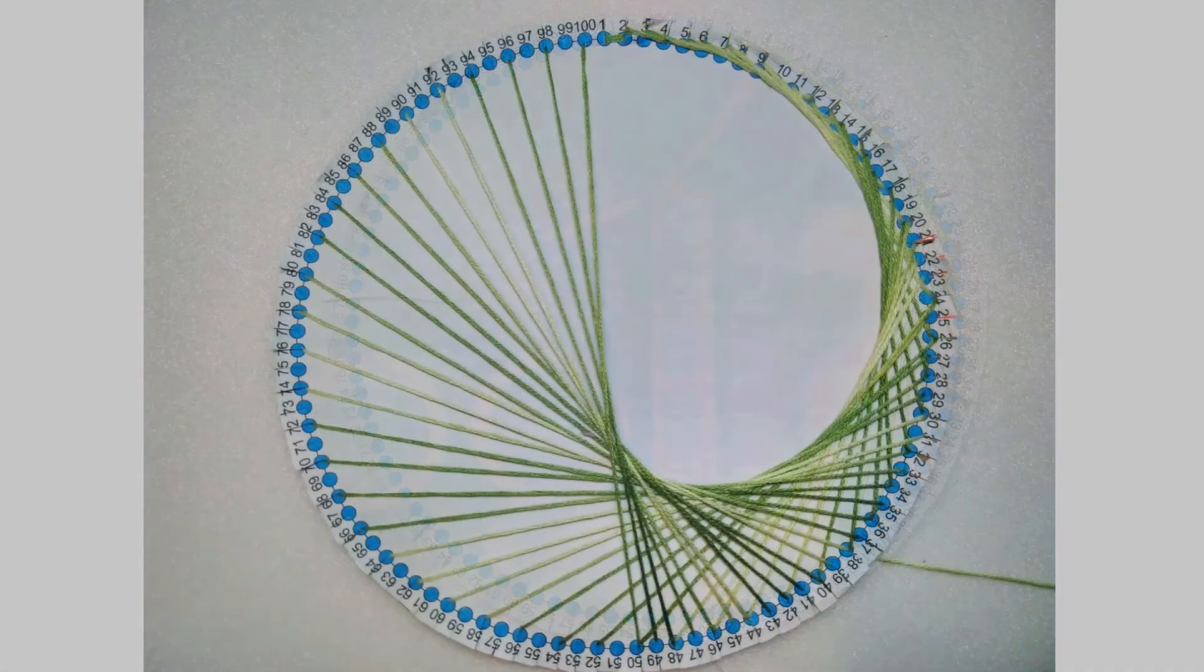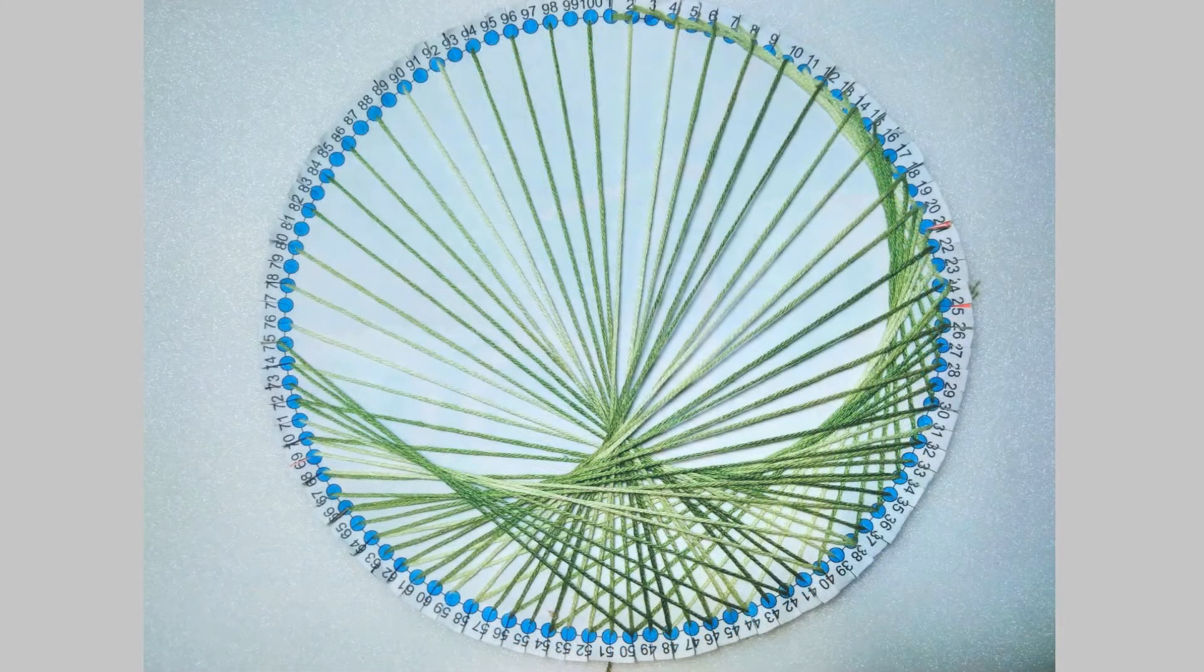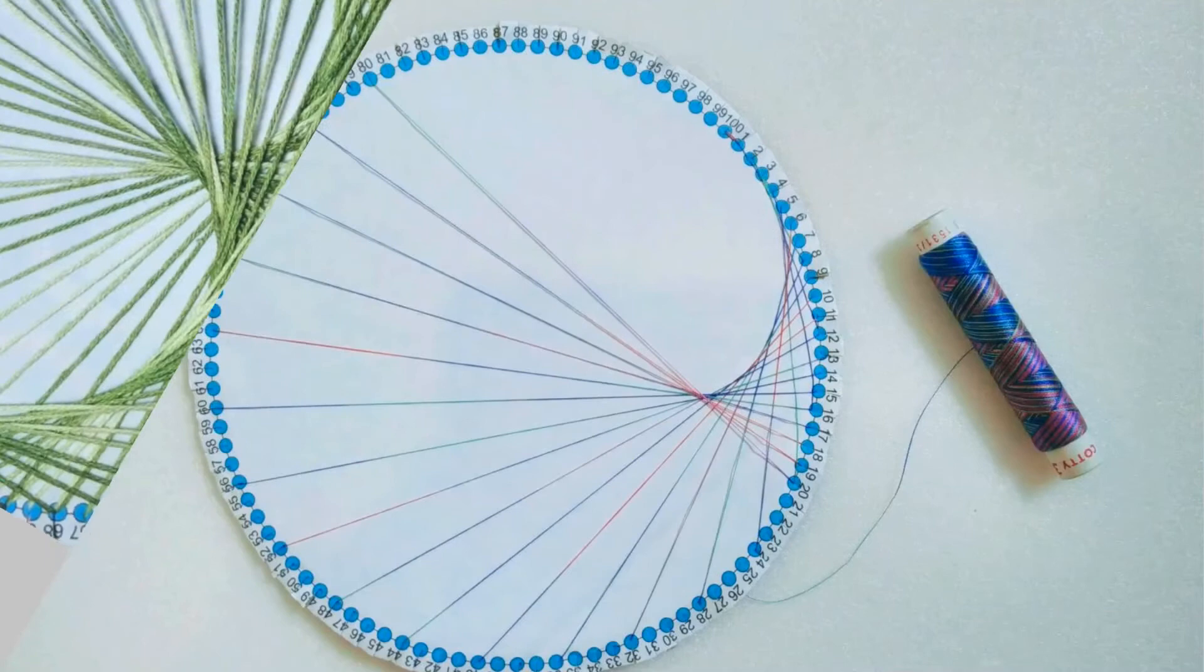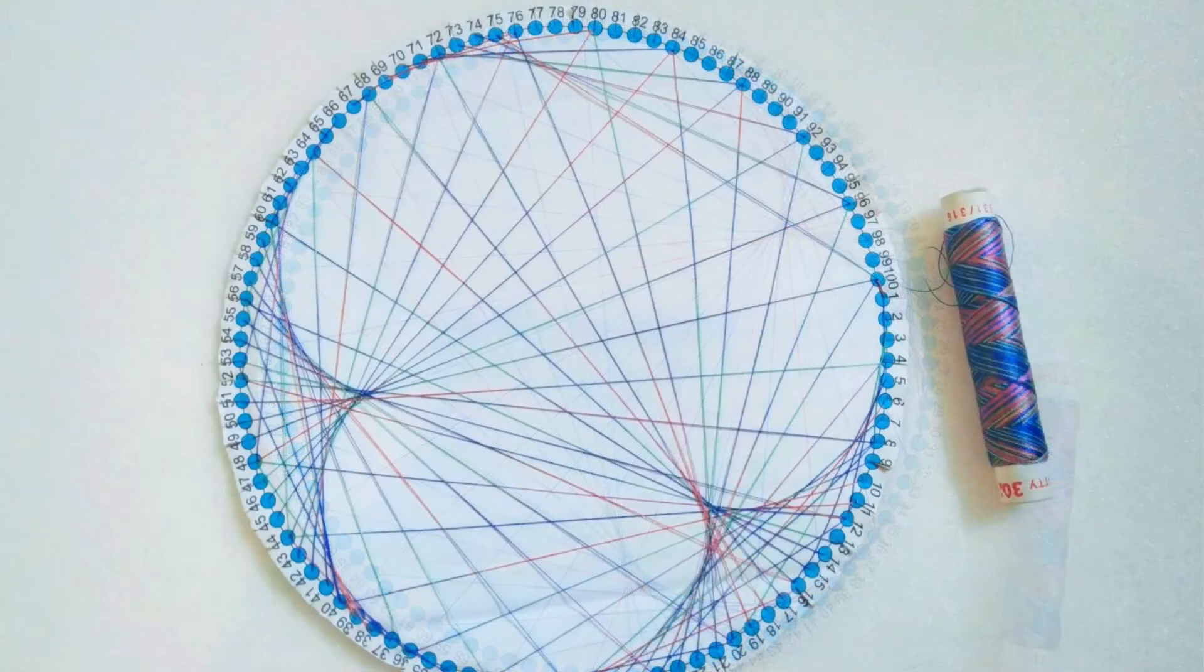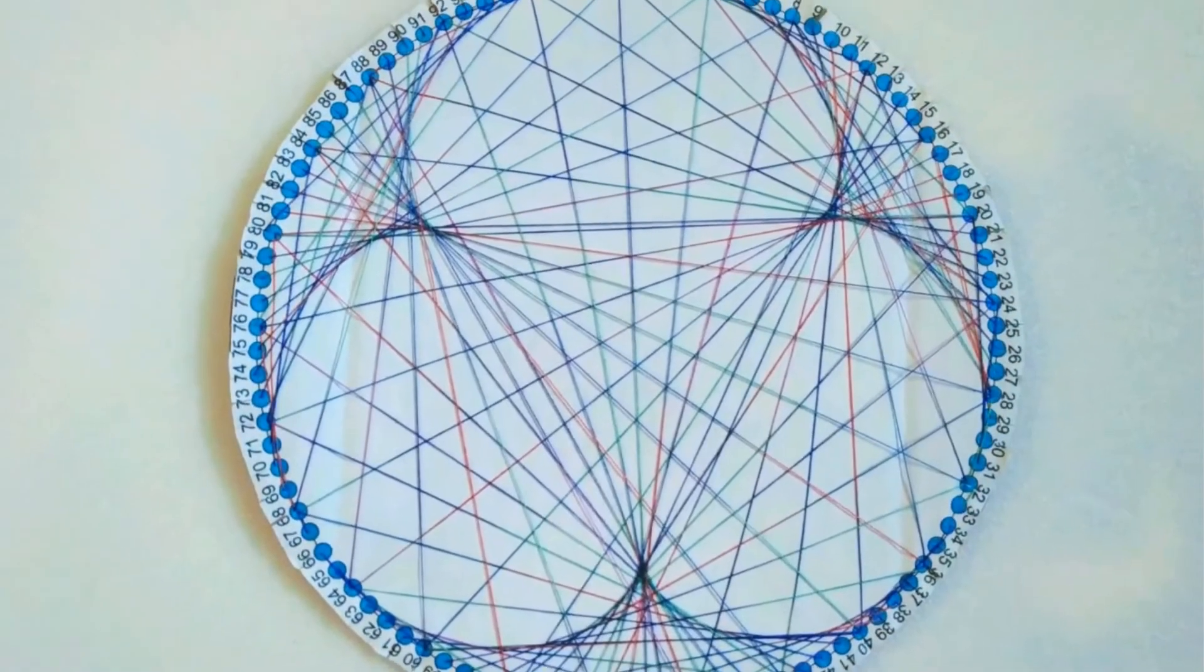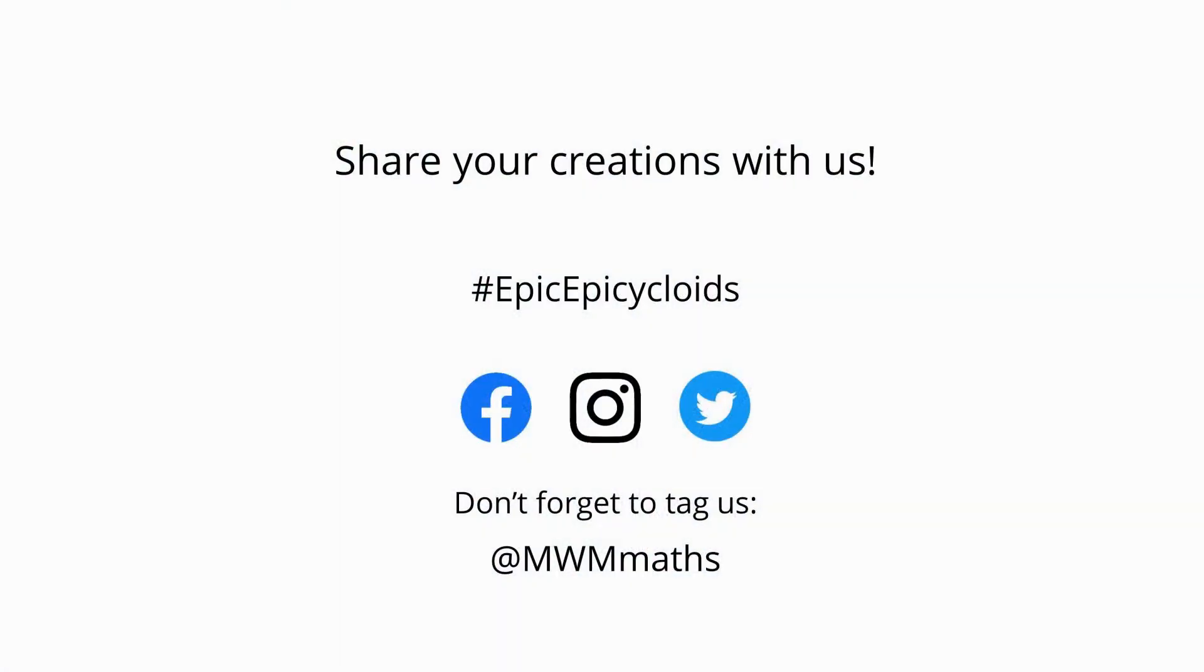This cardioid is made with embroidery floss. I mapped each point n to point 4 times n to make this epicycloid of Cremona using sewing thread. Download a template and have a go.